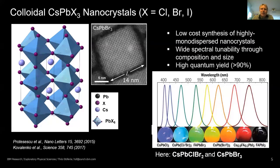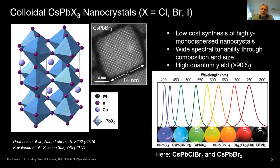The material system we are looking at is colloidal lead halide perovskite nanocrystals. The crystal structure contains cesium as the center atom with lead octahedra around it and halide atoms — chlorine, bromine, or iodine. Our favorites are chlorine and bromine. The advantages of these materials include a simple synthesis, highly monodisperse nanocrystals, spectral tunability through halide composition or size, and very high quantum yield at room temperature even without passivating shells.